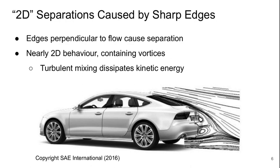First let's talk about 2D separations. These are essentially separations caused by the presence of sharp edges. When those edges are perpendicular to the direction of flow, they cause a separation. You get pretty two-dimensional behavior and you get these vortices in the wake behind the separation, and you get turbulent mixing which dissipates kinetic energy — and this is a mechanism which leads to drag generation.